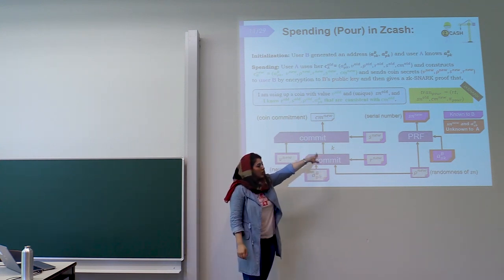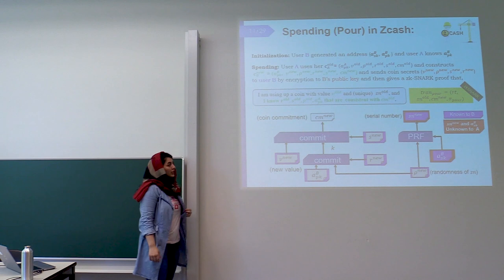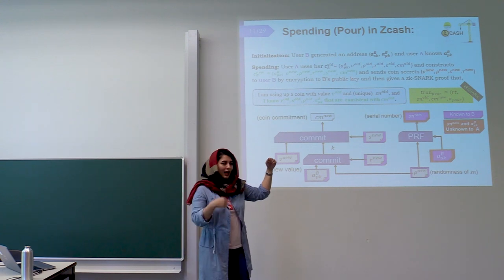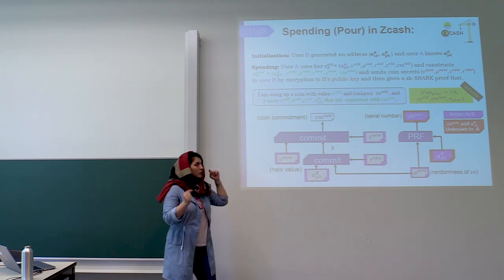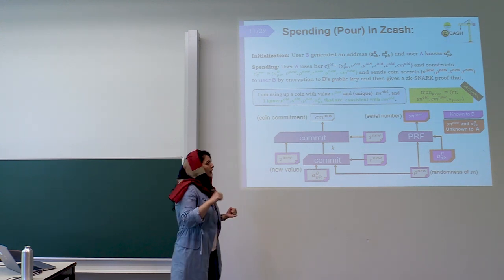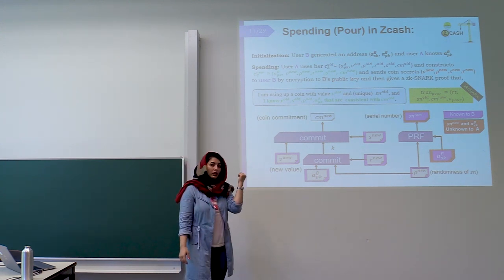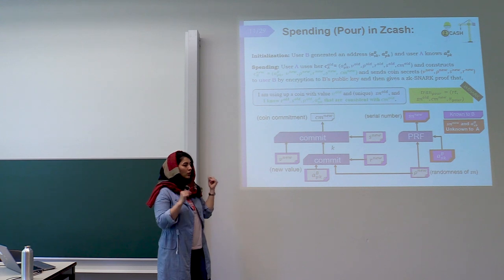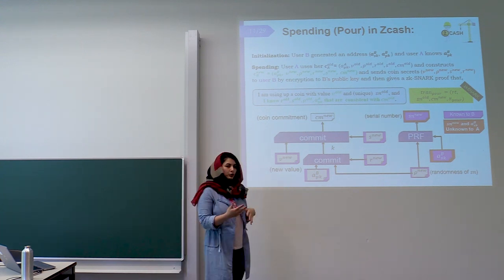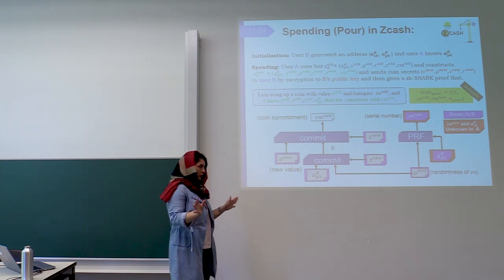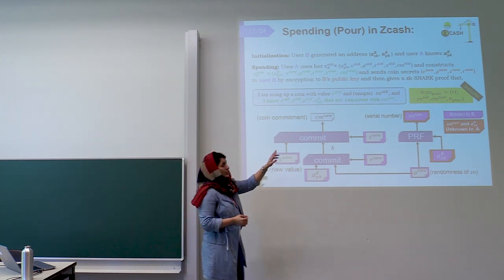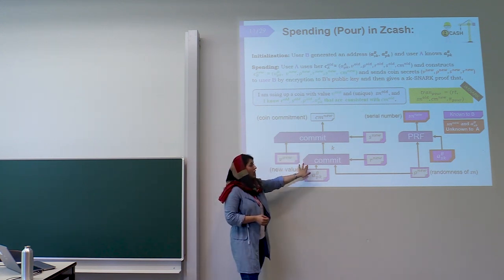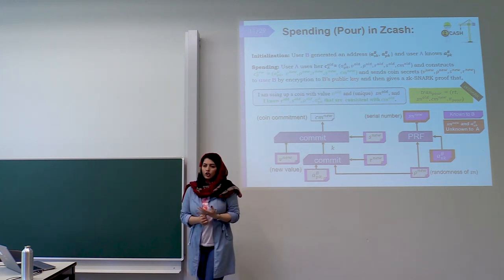This algorithm outputs a Pour transaction which contains the root of the Merkle tree, the old coin's serial number, the new coin's commitment, and a proof that everything has been done correctly. In Zcash, all pseudorandom functions and commitments are instantiated with SHA-256. This transaction states: I am using a coin with value V_old and a unique old serial number. To prevent double spending, the old coin's serial number is sent to the spent coins list.